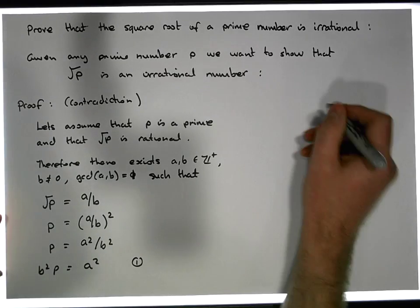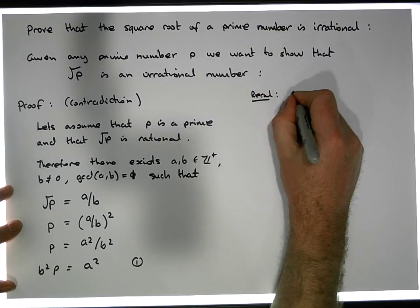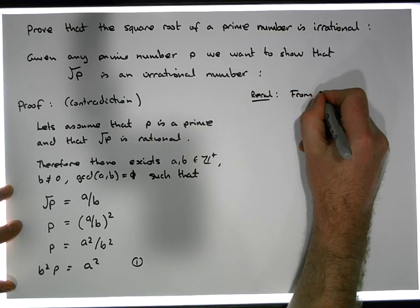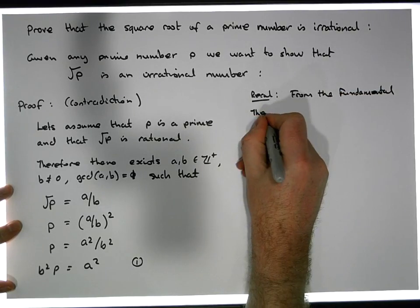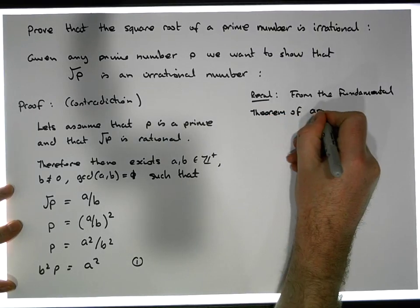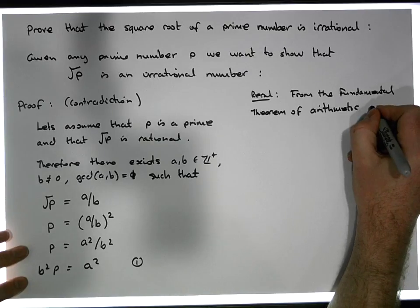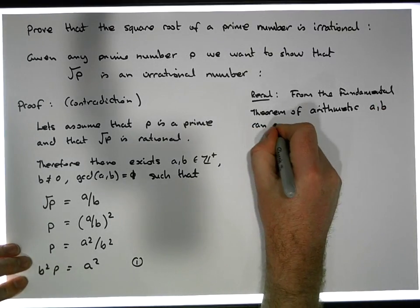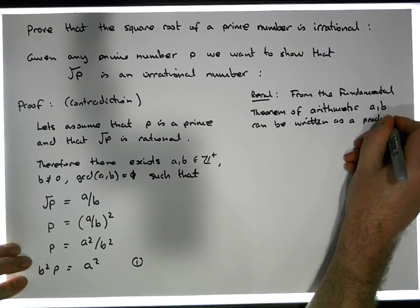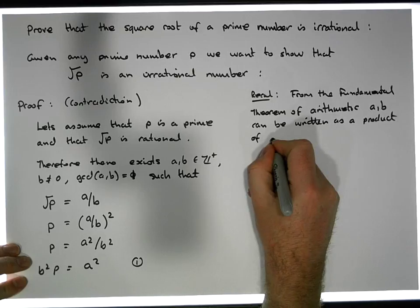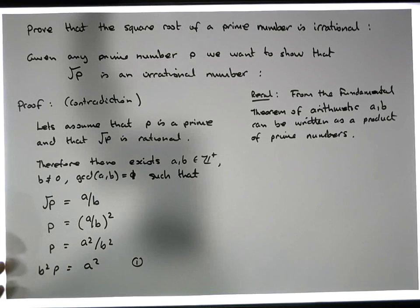Now, let's recall from the fundamental theorem of arithmetic that A and B can be written as a product of prime numbers. So A can be written as P1 to the N1, times P2 to the N2, times P3 to the N3, all the way through to the Nth prime to the Ni. And similarly, B can be written as a product of primes: Q1 to the N1, Q2 to the N2, Q3 to the N3, all the way through to QN to the Ni.